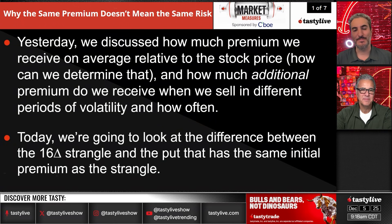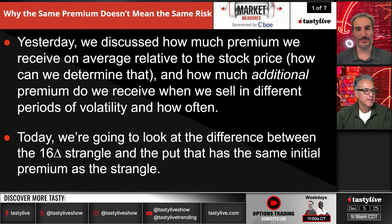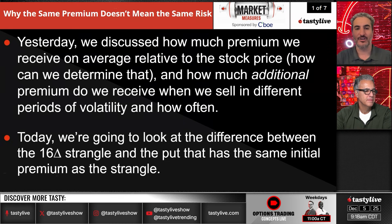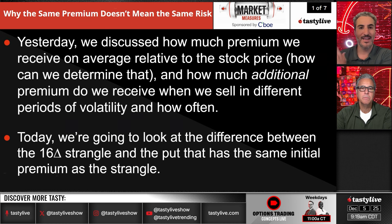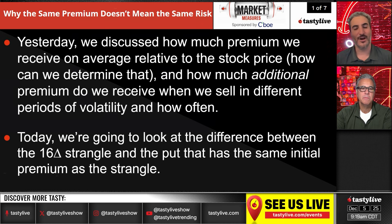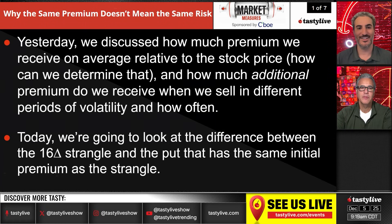Yesterday's takeaway was that periods of very high volatility don't come very often. You want a range of volatility in that 30 to 60 IV rank range — that's kind of the nirvana spot. You don't want volatility too low or too high; you want it just right.